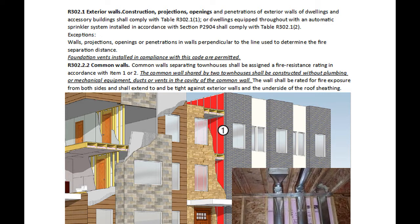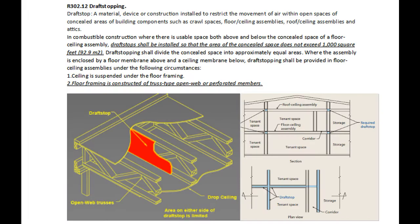R302.2.2.2 Common Walls. The common wall separating townhouses shall be assigned a fire resistance rating in accordance with item 1 or 2. The common wall shared by two townhouses shall be constructed without plumbing or mechanical equipment ducts or vents in the cavity of the common wall. The wall shall be rated for fire exposure from both sides and shall extend to and be tight against exterior walls and the underside of the roof's sheathing. R302.12 Draft Stopping: In combustible construction where there is usable space both above and below the concealed space of a floor-ceiling assembly, draft stops shall be installed so that the area of the concealed space does not exceed 1,000 square feet. Draft stopping shall divide the concealed space into approximately equal areas.